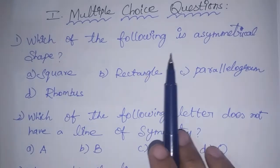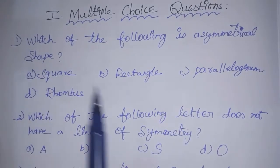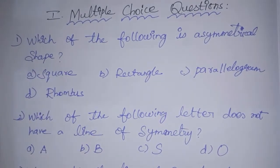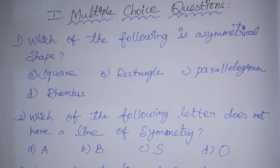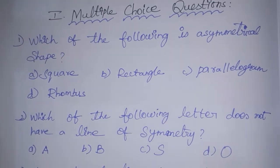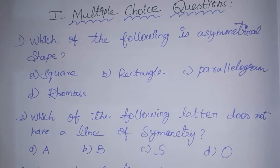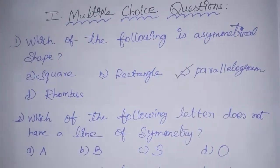Which of the following is an asymmetrical shape? That is the asymmetrical shape — this is a parallelogram.